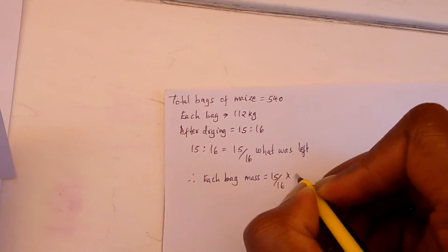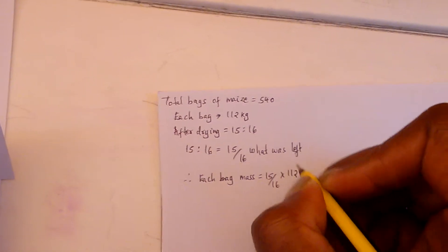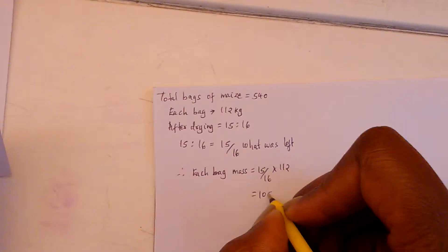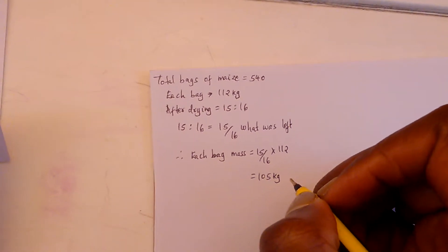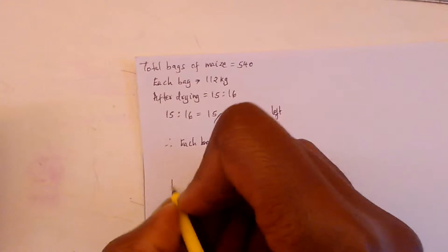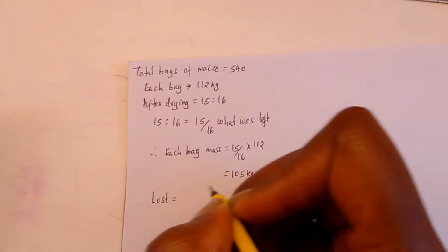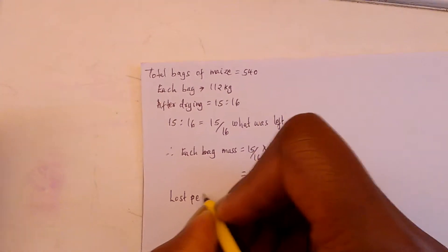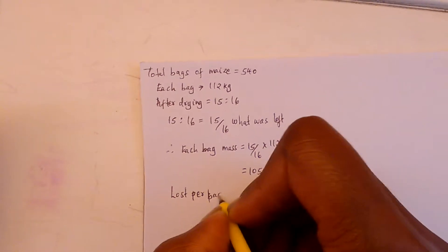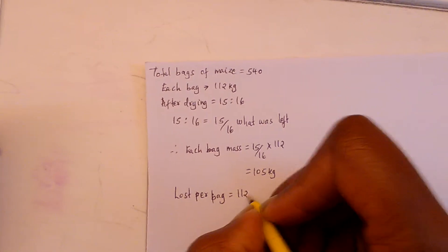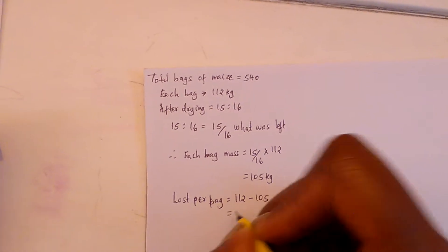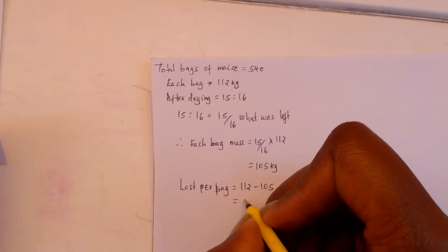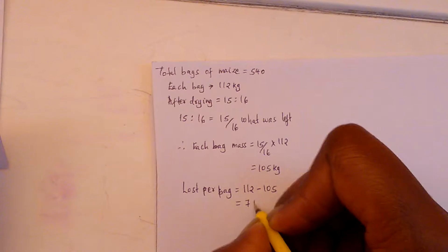This gives us 105 kg. But the question needs the total mass lost, so what was lost per bag will be 112 - 105 = 7 kg.